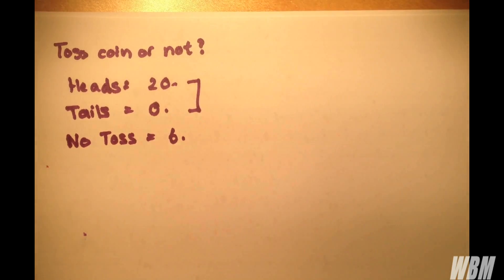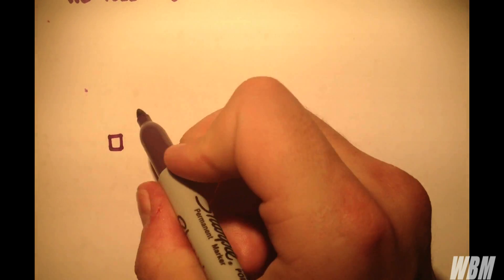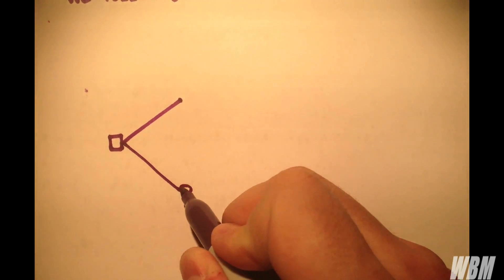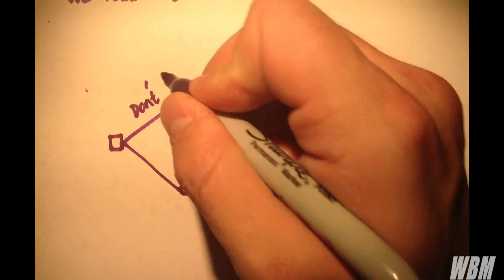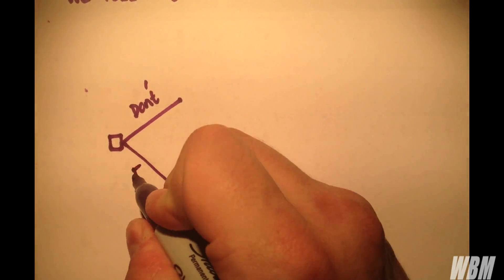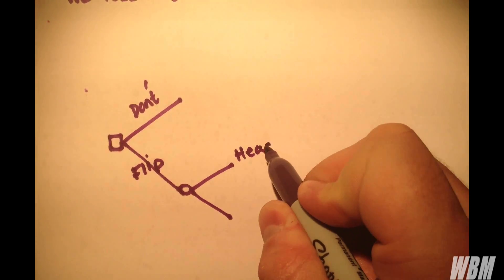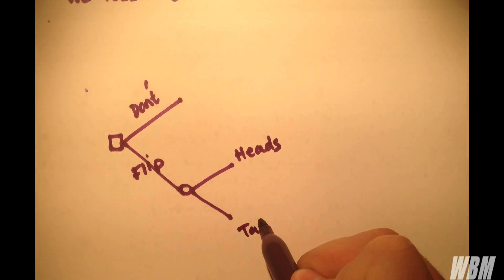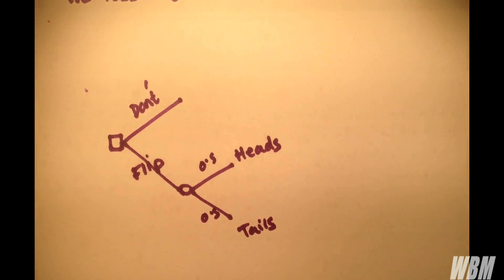So obviously a risk seeker would probably choose to toss the coin and go for 20. Let's see what a risk-averse utility function would tell us to do. So we draw our decision tree. Here's our decision. And here is our variable outcome. So this decision is don't flip. This decision is to flip. And we have a heads and we have a tails and we assume it's a fair coin with probability 0.5 on each point.